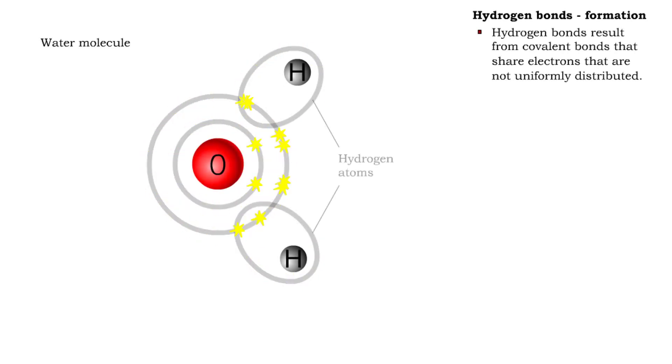When electrons are shared within a molecule, they are not always uniformly distributed. A water molecule has eight outer electrons contributed by its hydrogen and oxygen atoms.